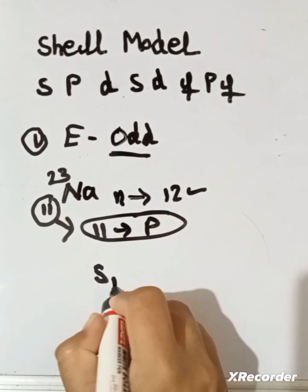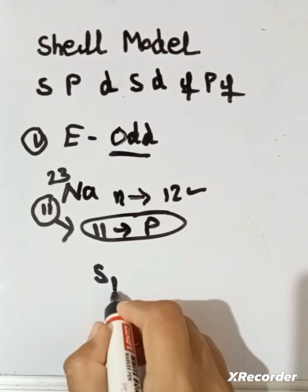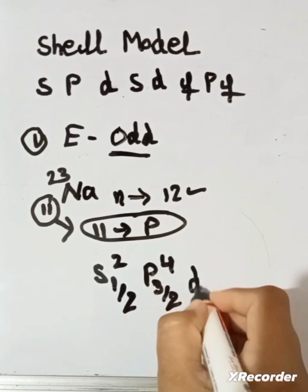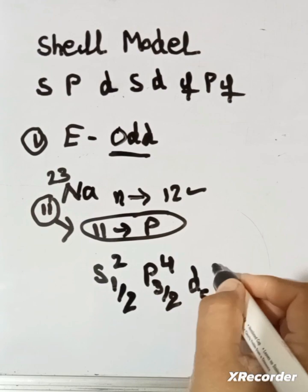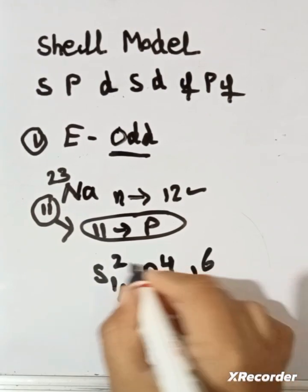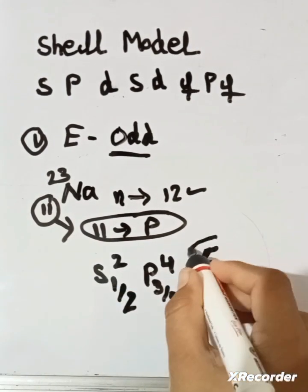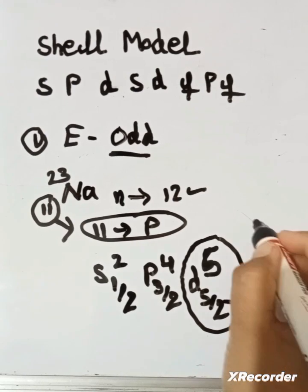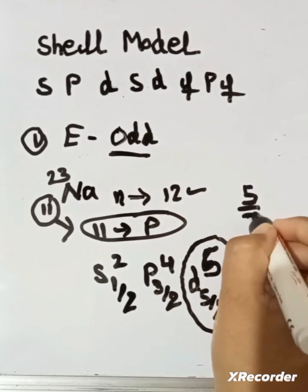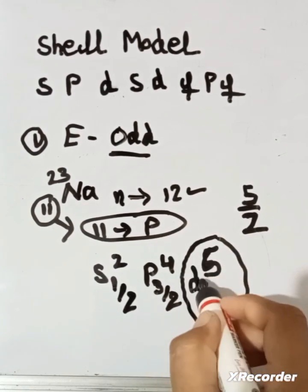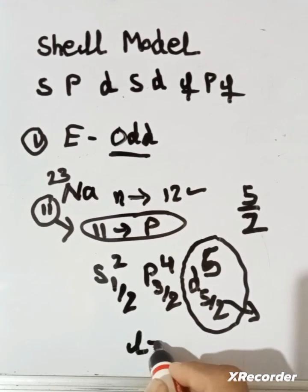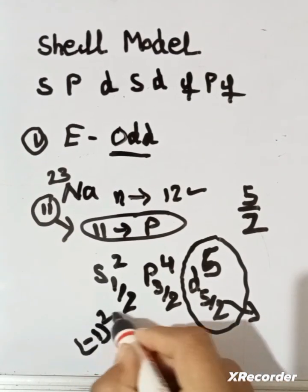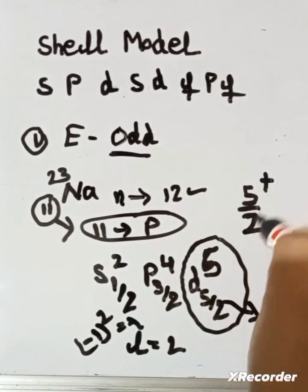Following the shell filling for protons: S (j=1/2) fills 2, P (j=3/2) fills 4, D (j=5/2) fills 6. The lower subshells are fully filled; the remaining 5th proton contributes. So j = 5/2. For parity, the last proton is in the D level where L = 2, so parity = (-1)^2 = +1. Therefore, spin-parity is 5/2+.